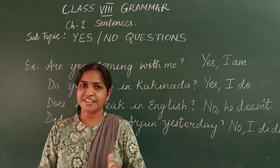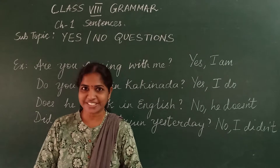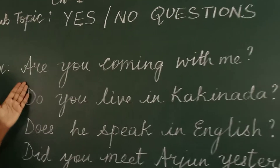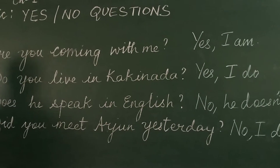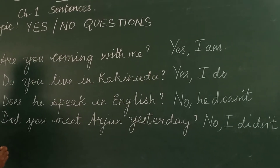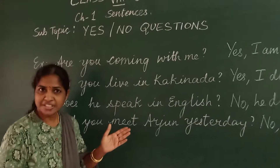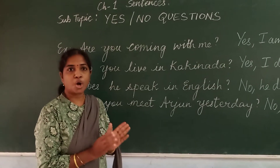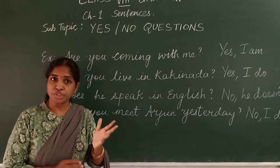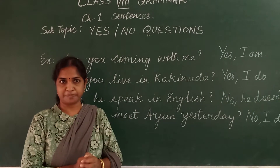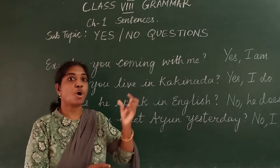Now, you might wonder, is it so simple? Then why learn? No. Let us check with a few more examples. Are you coming with me? Yes, I am. Do you live in Kankinada? Yes, I do. Does he speak in English? No, he doesn't. Did you meet our junior yesterday? No, I didn't. So students, when we answer yes or no questions, we normally don't use the complete question — we use only an appropriate auxiliary verb.